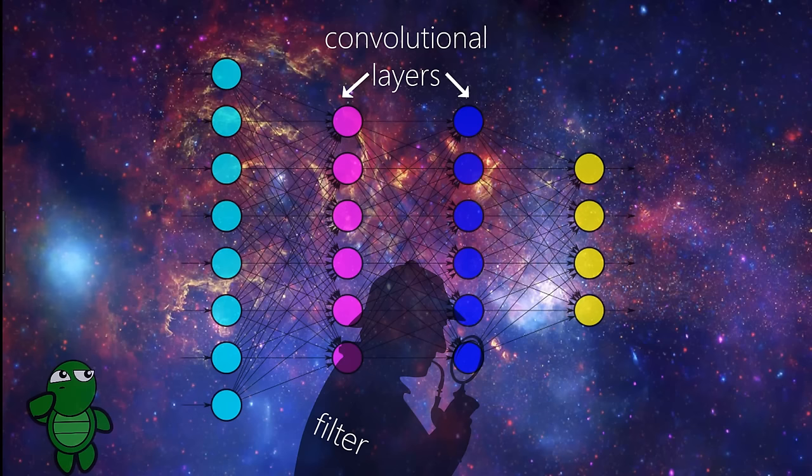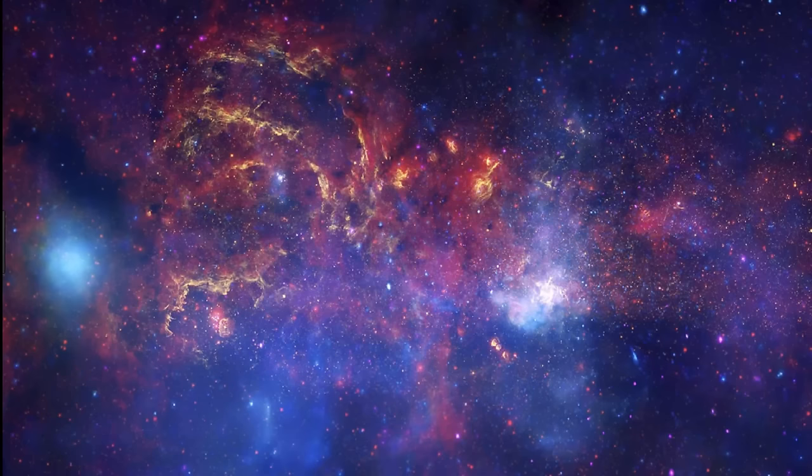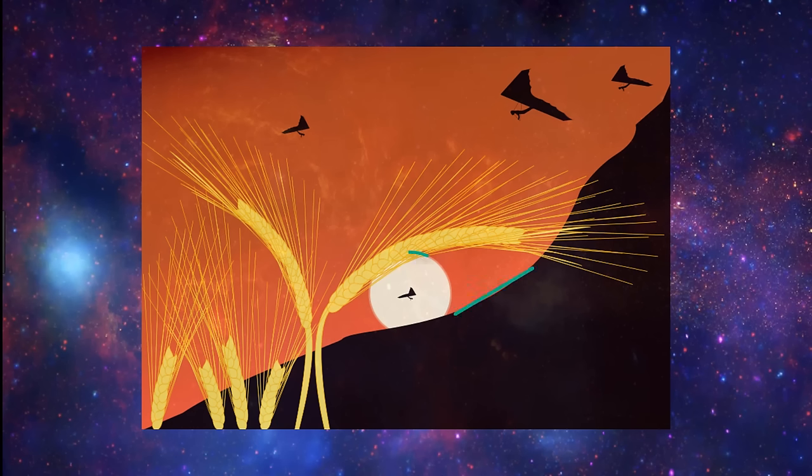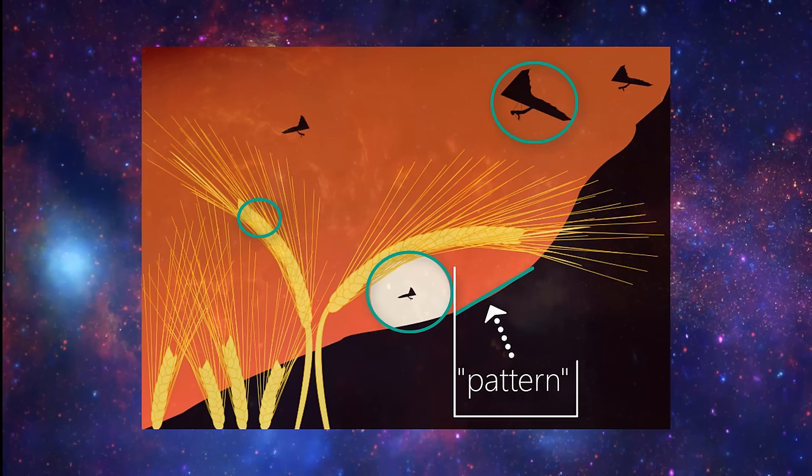Now when I say that the filters are able to detect patterns, what precisely do I mean by patterns? Well, think about how much may be going on in any single image: multiple edges, shapes, textures, objects, etc. So one type of pattern that a filter could detect could be edges in images. So this filter would be called an edge detector, for example. Some filters may detect corners, some may detect circles, others squares.